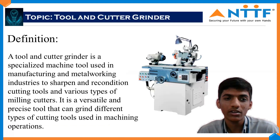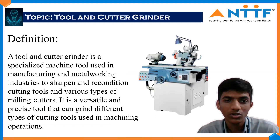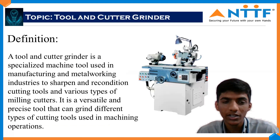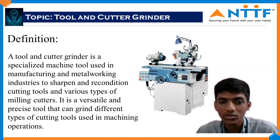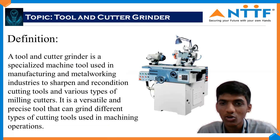So what is a tool and cutter grinder? A tool and cutter grinder is a specialized machine tool used in manufacturing and metalworking industries to sharpen and recondition cutting tools and various types of milling cutters. It is a versatile and precise tool that can grind different types of cutting tools used in machining operations. This type of machine is commonly used in industries.